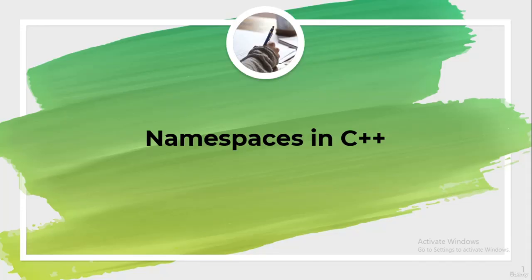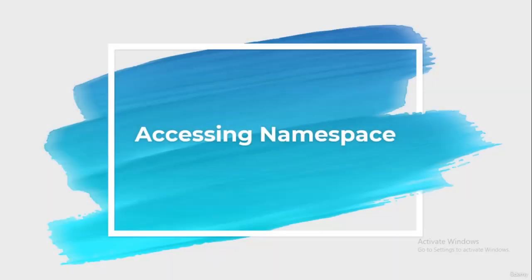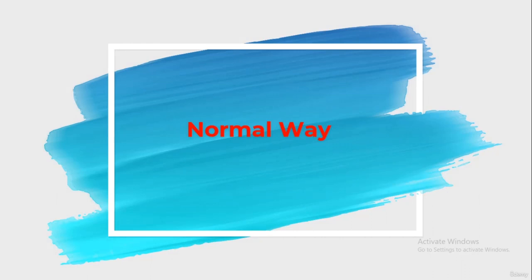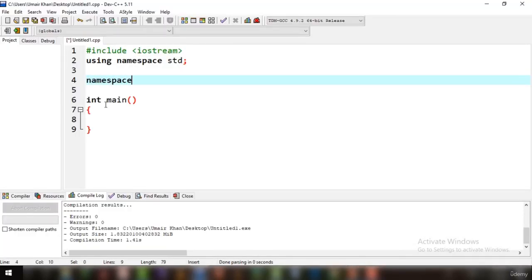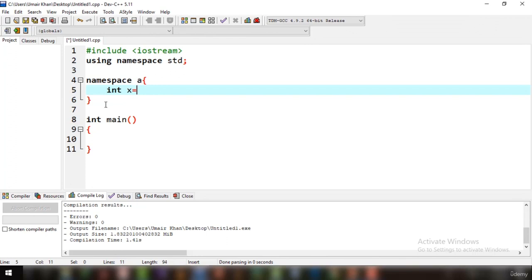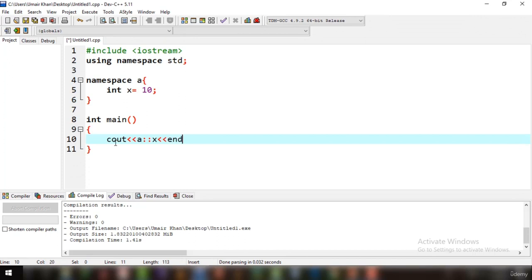In this tutorial we are going to cover accessing namespaces. There are two ways to access a namespace: the normal way and the using directive way. The normal way — already covered in previous tutorials — is: write the name of the namespace (e.g., 'a'), then two colons, then the variable or function name (e.g., 'a::x'). If you run it, 10 is printed on the output screen.